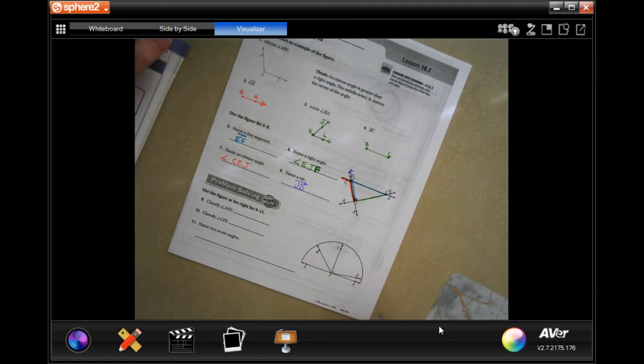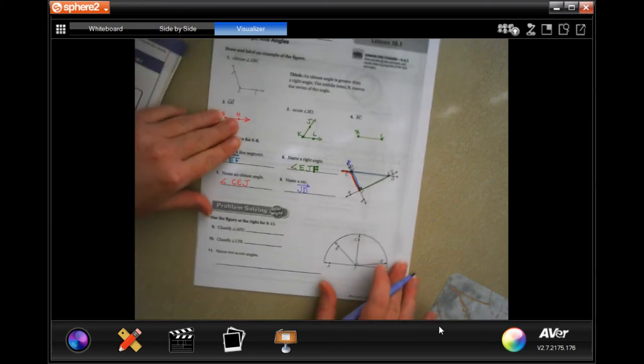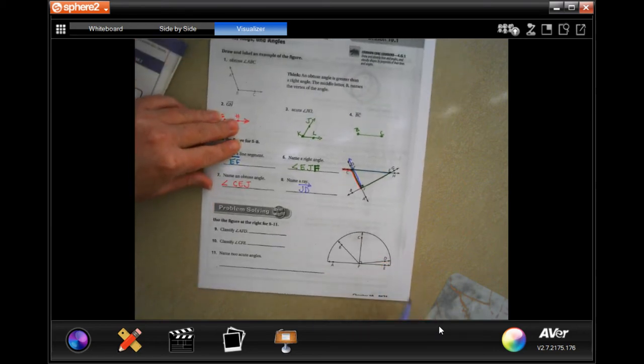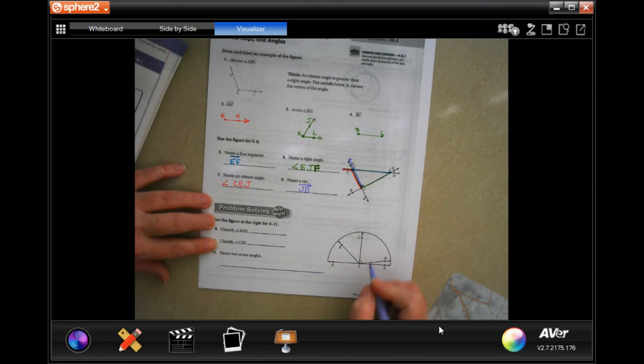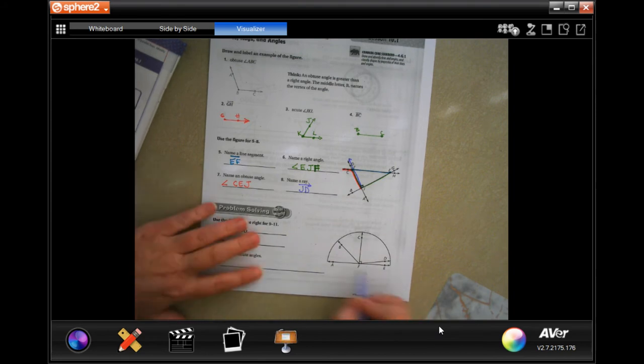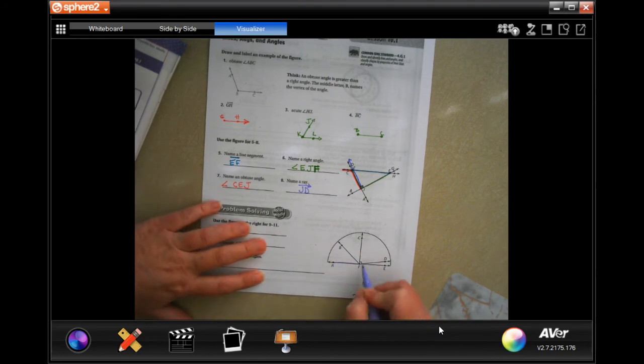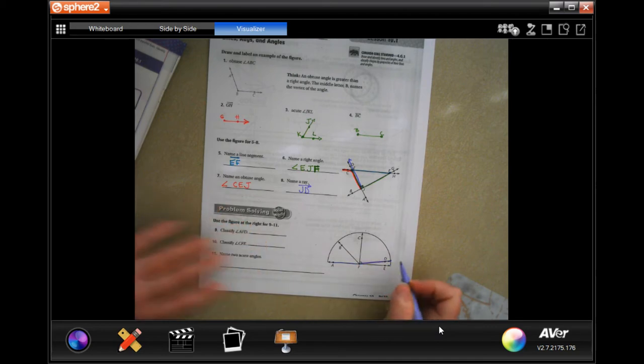Now we're going to see if it's acute, obtuse, or a right angle. Classify A, F, D. Here's A to F to D. That is definitely leaned back further than a 90 degree angle, so we're going to say it's obtuse.